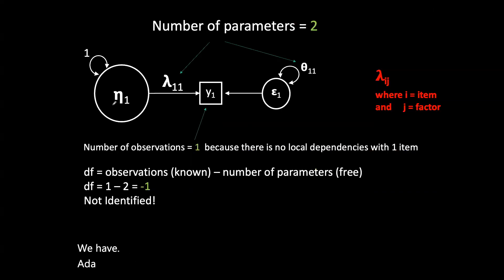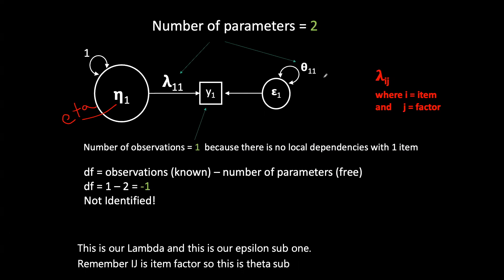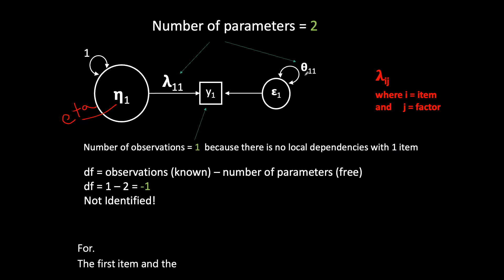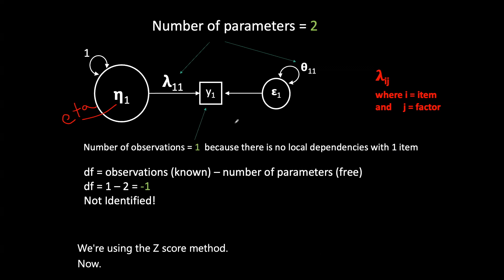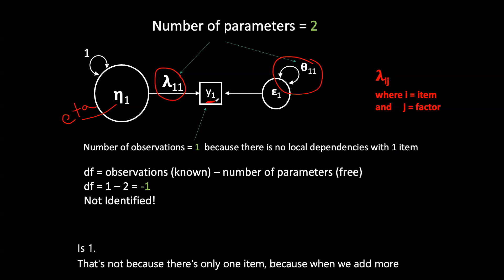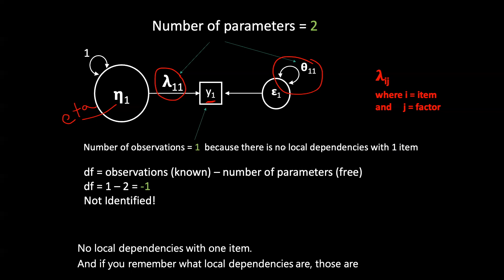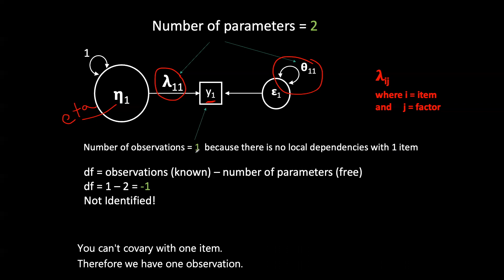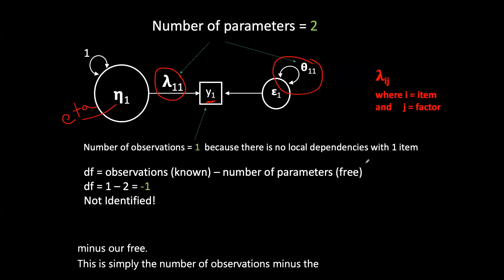In this first example, we have eta sub one as our factor, lambda as our factor loading, epsilon sub one as our error, and theta sub one-one as the residual variance for the first item and the first factor. We set our factor variance to one using the Z-score method. We have two parameters: one factor loading and one residual variance. The number of observations is one, because you can't covary with one item, so there are no local dependencies. Plugging into our degrees of freedom formula (known minus free): one minus two gives us negative degrees of freedom — so this model is not identified.